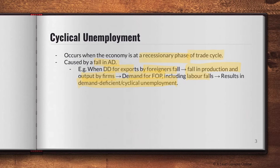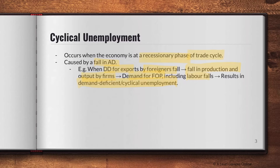When there is a recession, or a fall in an AD factor such as exports or investment spending, this causes a fall in AD, which leads to a fall in national income. Firms then cut down on output, and to maintain profits they reduce costs. The easiest cost to cut is labor, so the derived demand for labor falls — firms either lay off workers or reduce job openings — resulting in more people being unemployed. This is why it is called demand-deficient unemployment.